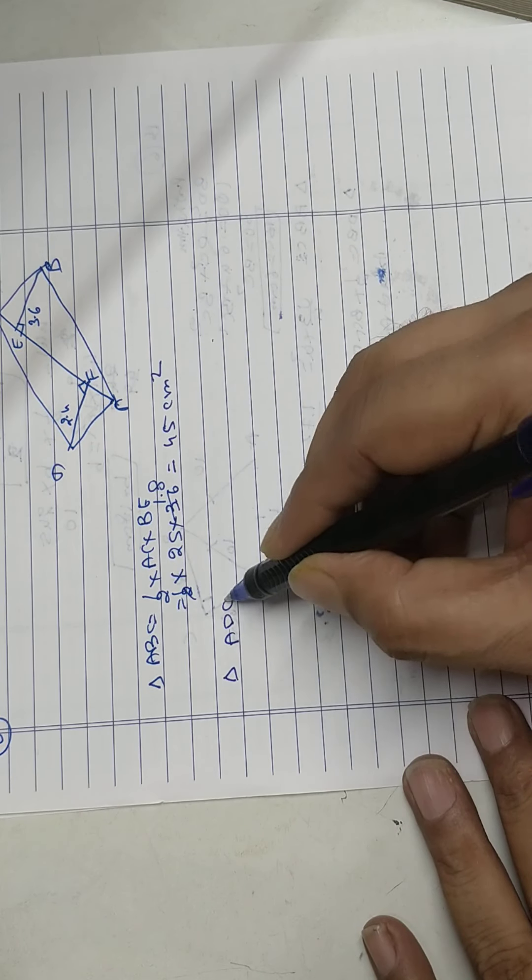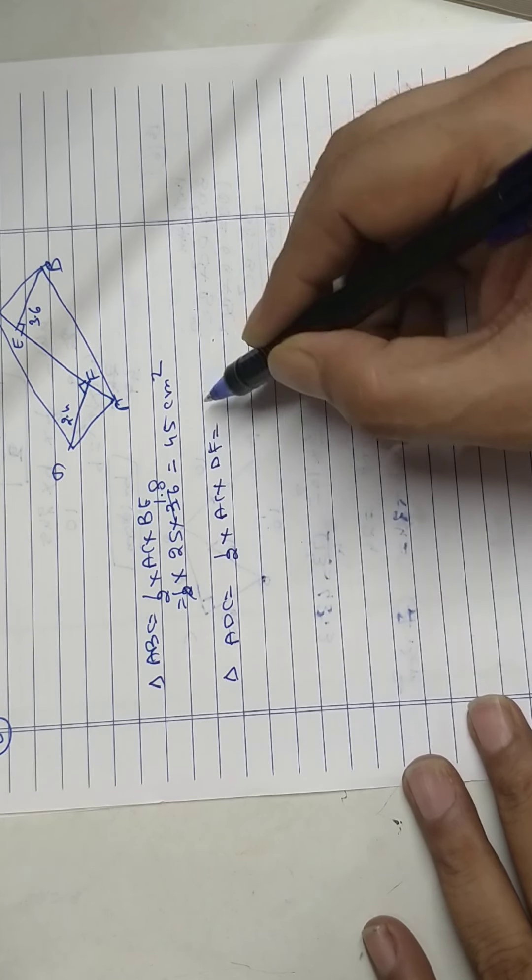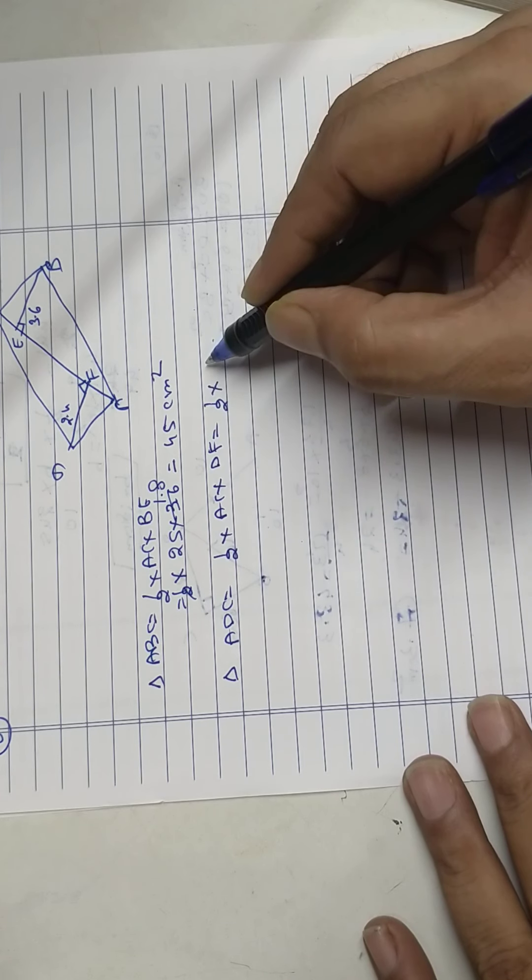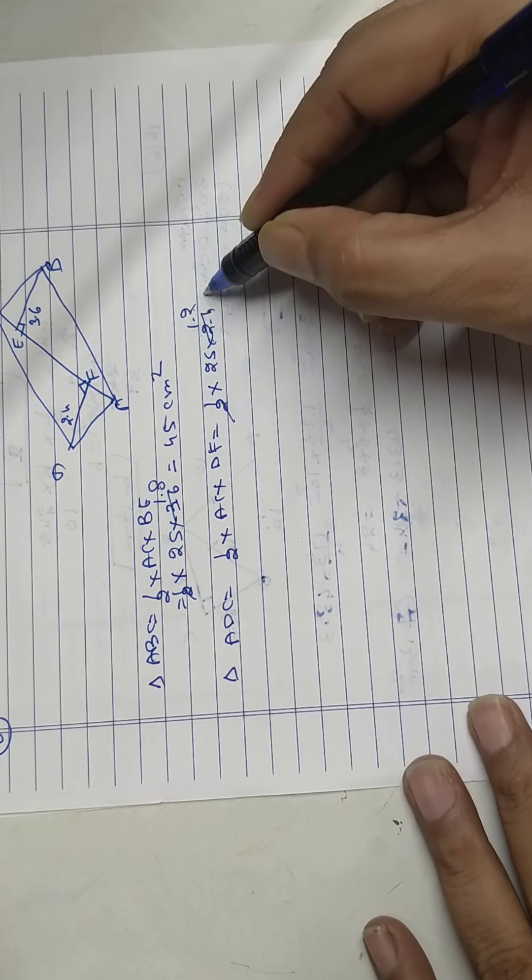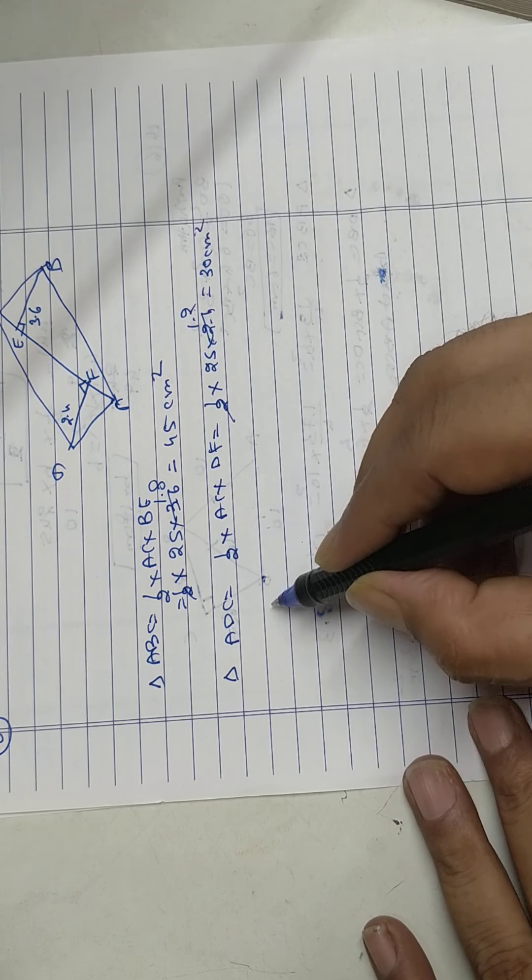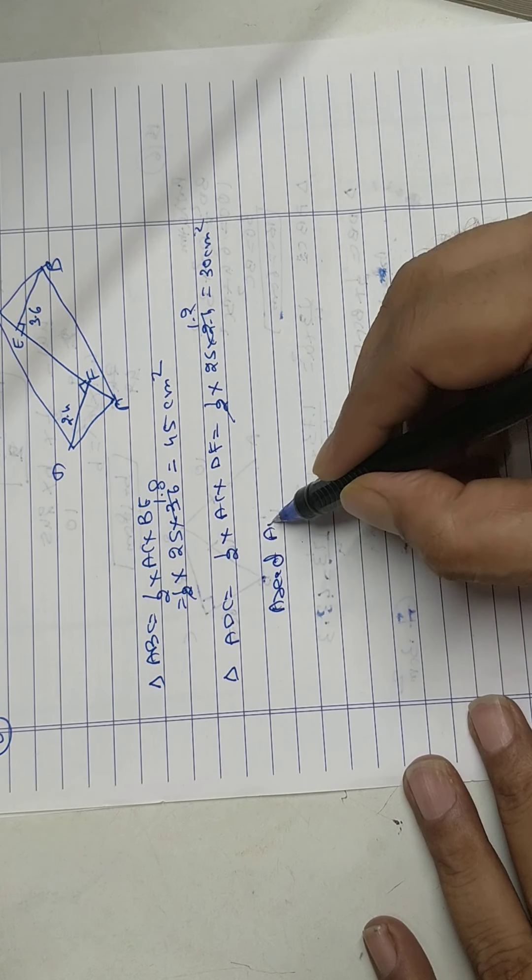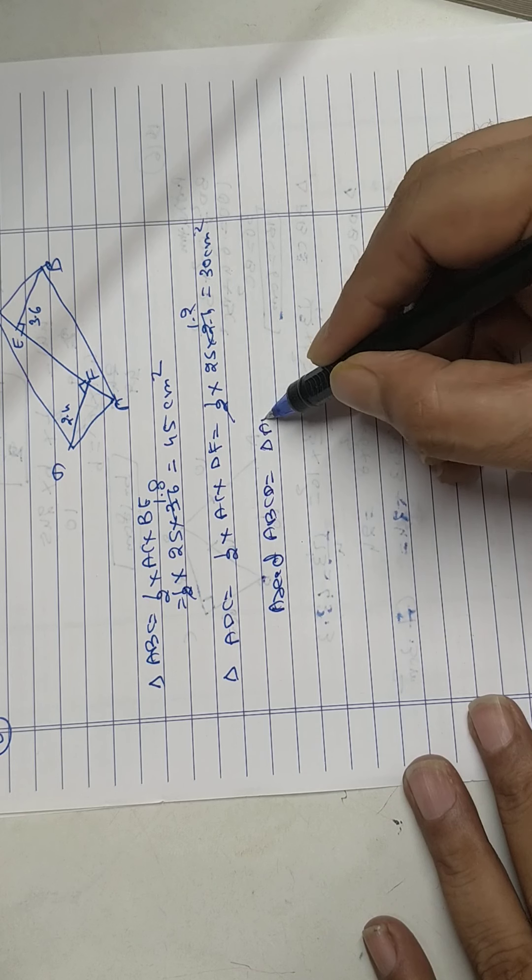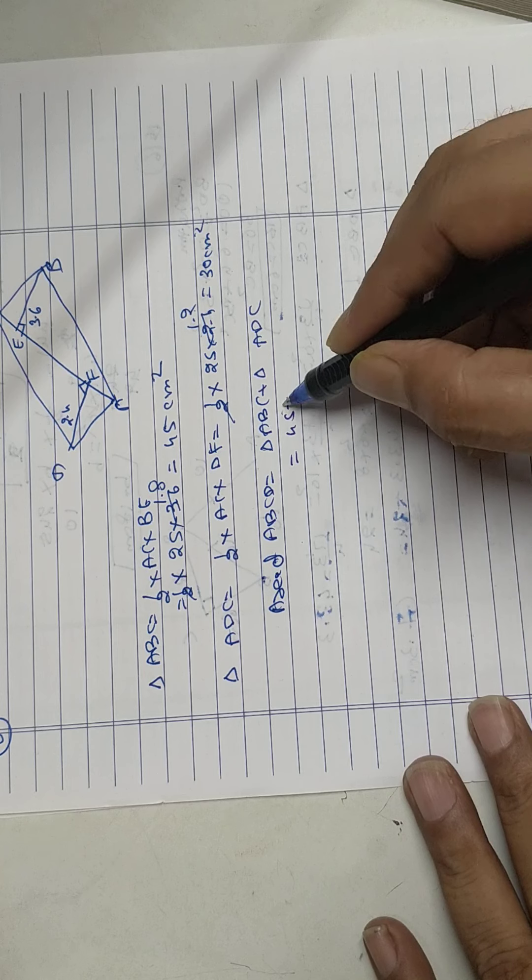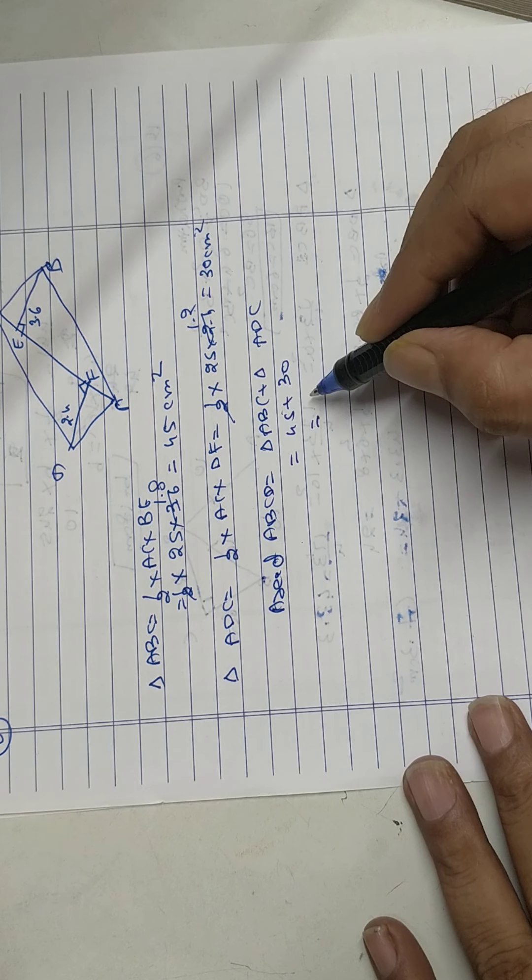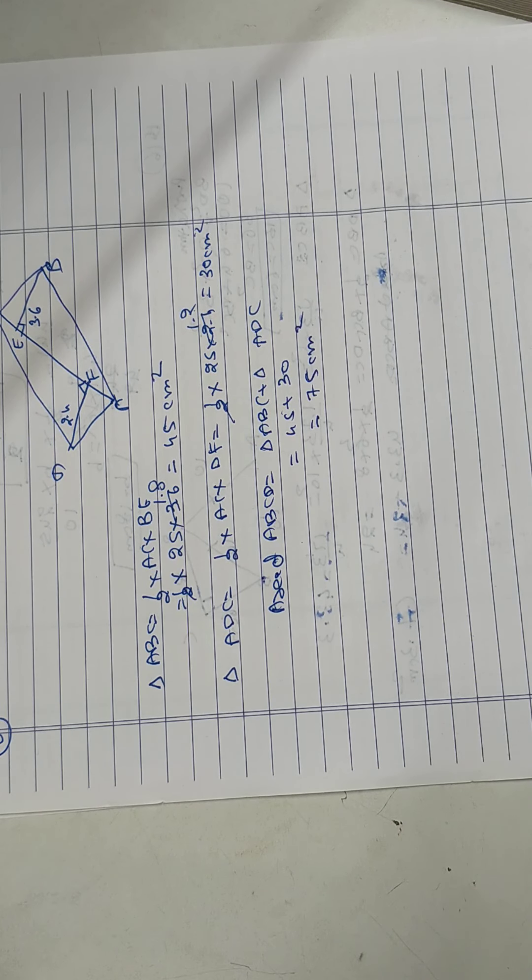Now find area of triangle ADC. Half into base AC, height is DF. Half into 25 into 2.4. Multiply, I'll get 30 centimeter square. Therefore area of ABCD, triangle ABC plus ADC, 45 plus 30, that is 75 centimeter square. Please redo all the sums, thanks.